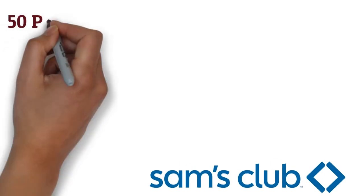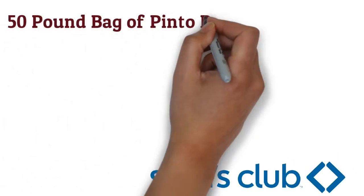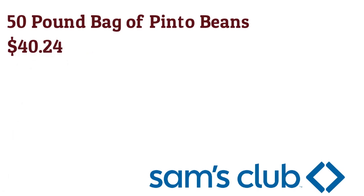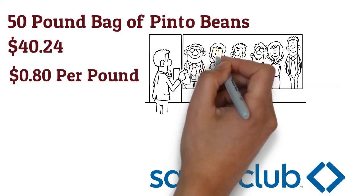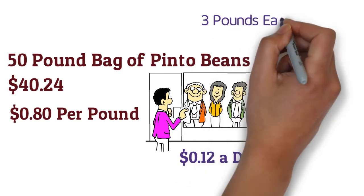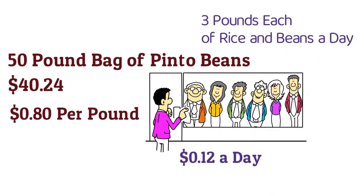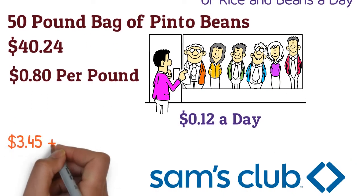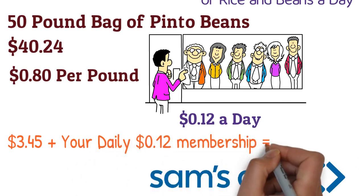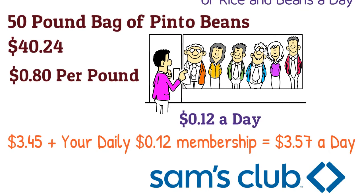At Sam's Club, you'll also find a 50-pound bag of pinto beans for $40.24. This comes out to $0.80 per pound. So let's do the math real quick. Your membership is costing you about $0.12 a day. Now let's say you have three pounds each of rice and beans a day. So that comes out to $3.45 plus your daily 12-cent membership, which equals $3.57 a day.